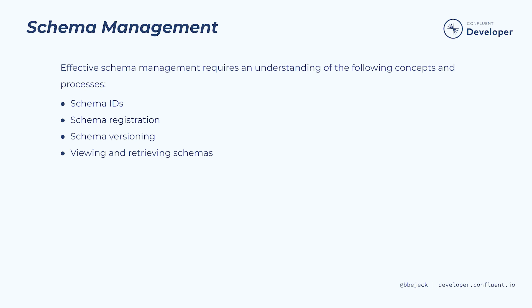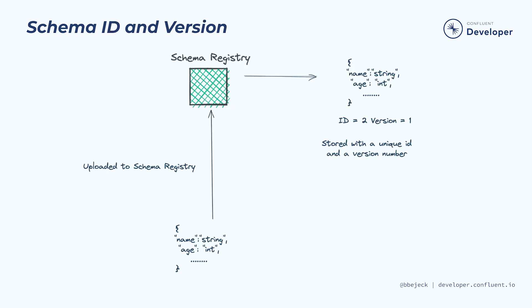For now, let's see how to register a schema. Suppose we've already created some schema and we want to register it. Before we get into the ways that we can register a schema, let's first talk about what happens during registration. When you register a schema, you provide the subject name in addition to the schema itself. The subject name is what we'll use to identify the schema, and it's usually just the namespace for the schema, almost like a key when you use a hash map.